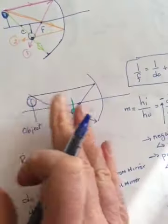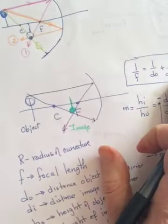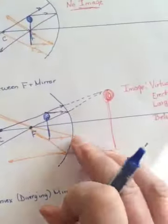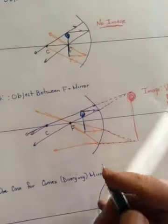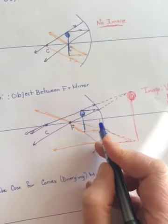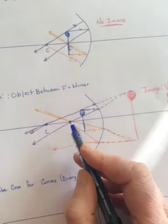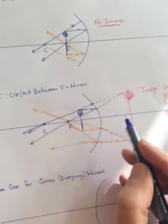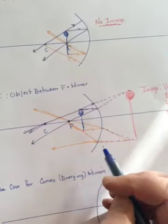All right. So anything that lands on the front of the mirror will be real. Anything that lands behind the mirror will be virtual. The reason I'm saying that is because if in this question, in this case, I could tell you that an object is placed, I don't know, 10 centimeters in front of a concave mirror that has a focal length of 20 centimeters.